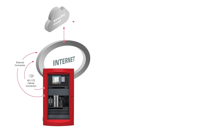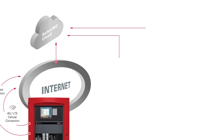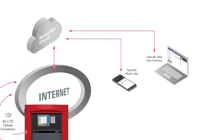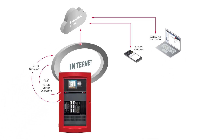Having system data in the SafeLink Cloud makes it easy for any authorized user to monitor all control units anywhere, either through a web interface or a mobile device, using the SafeLink Cloud application.